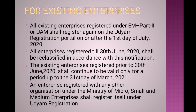For existing enterprises, the registration process is as follows: All existing enterprises registered under EM Part 2 or UAM should register again on the Udyam registration portal on or after 1st July 2020. All enterprises registered till 30th June 2020 shall be reclassified in accordance with this notification. Existing enterprises registered prior to 13th June 2020 shall continue to be valid only for a period up to 31st March 2021. Any enterprise registered with any other organization under the Ministry of Micro, Small and Medium Enterprises shall register itself under Udyam registration.